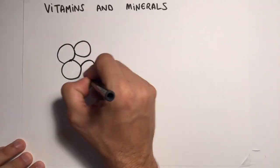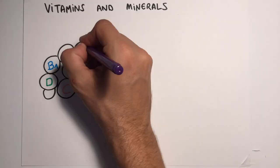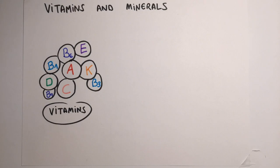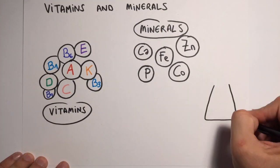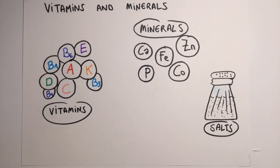Finally, vitamins and minerals. They are necessary for our body to function properly. Vitamins and minerals are found in fruit, vegetables, and dairy products mainly.